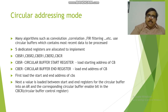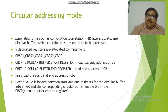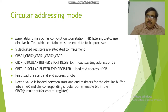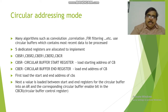In the circular addressing mode, there are many algorithms like convolution, correlation, and FIR filtering which use circular buffers for data processing. There are 5 circular buffer registers: CBSR1, CBSR2, CBER1, CBER2, and CBCR. CBSR1 and CBSR2 are the circular buffer start address registers. CBER1 and CBER2 are the circular buffer end address registers. These registers load the starting and ending addresses into the circular buffers. The next value to be loaded in the start and end registers for the circular buffer is placed into an auxiliary register for the corresponding circular buffer, enabled in the CBCR.